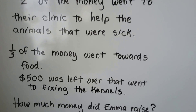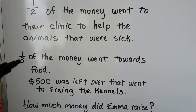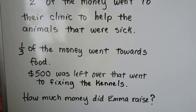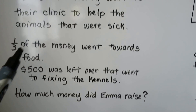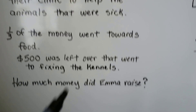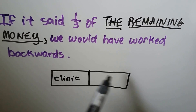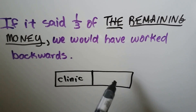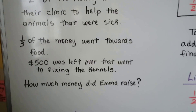Now the wording of this is very important. It says half of the money — that means half of the total. It says one-third of the money — that means one-third of the total. Now if it had said one-third of the remaining money, that would mean half went to the clinic and then one-third of the remaining half went towards food. But it doesn't say that. It says one-third of the money, so that means one-third of the total. So we can just add these.